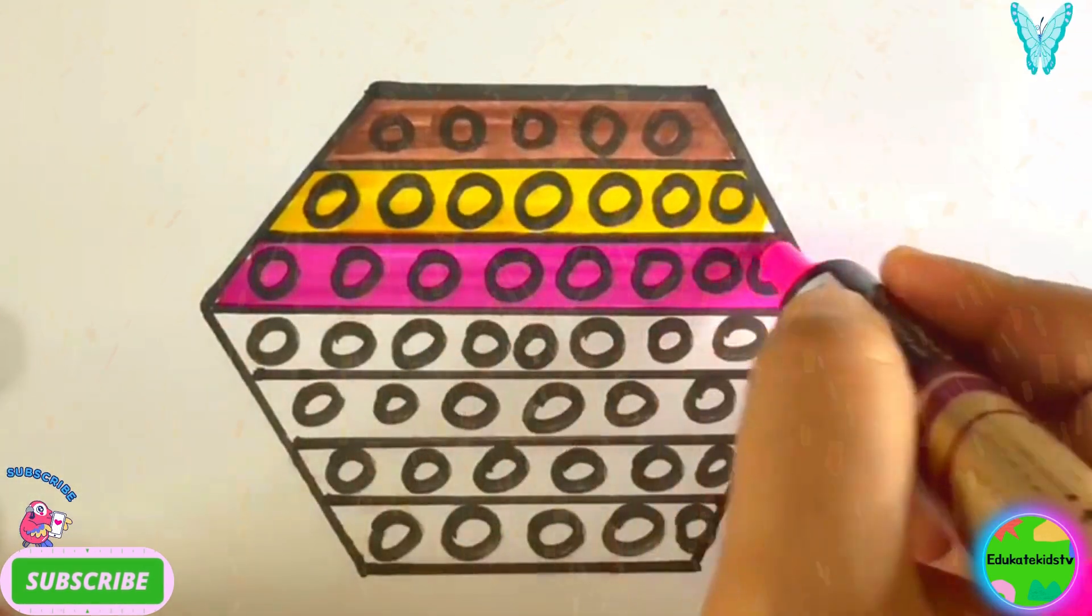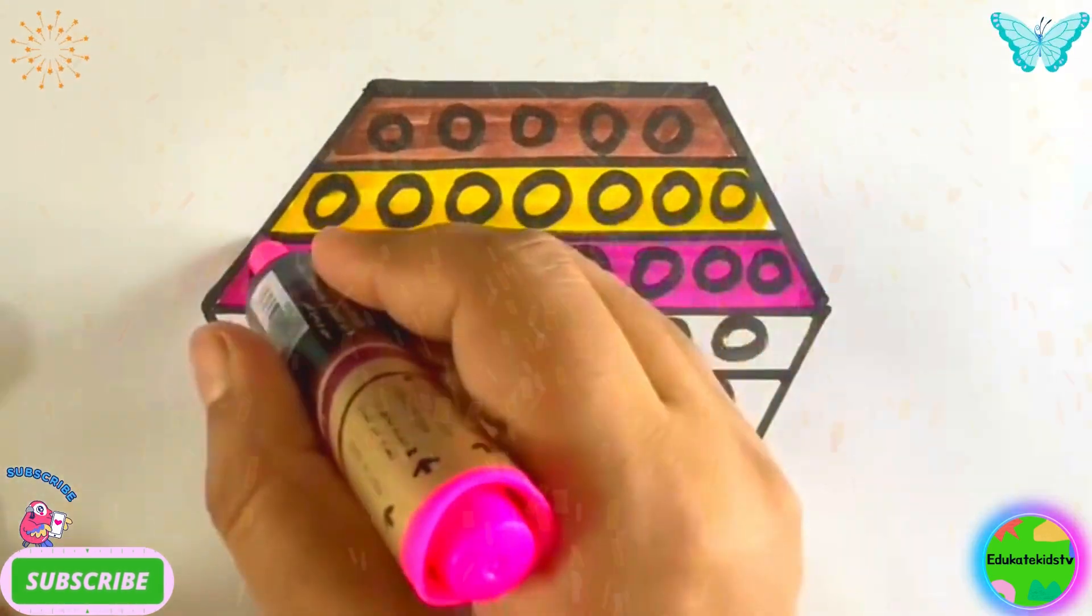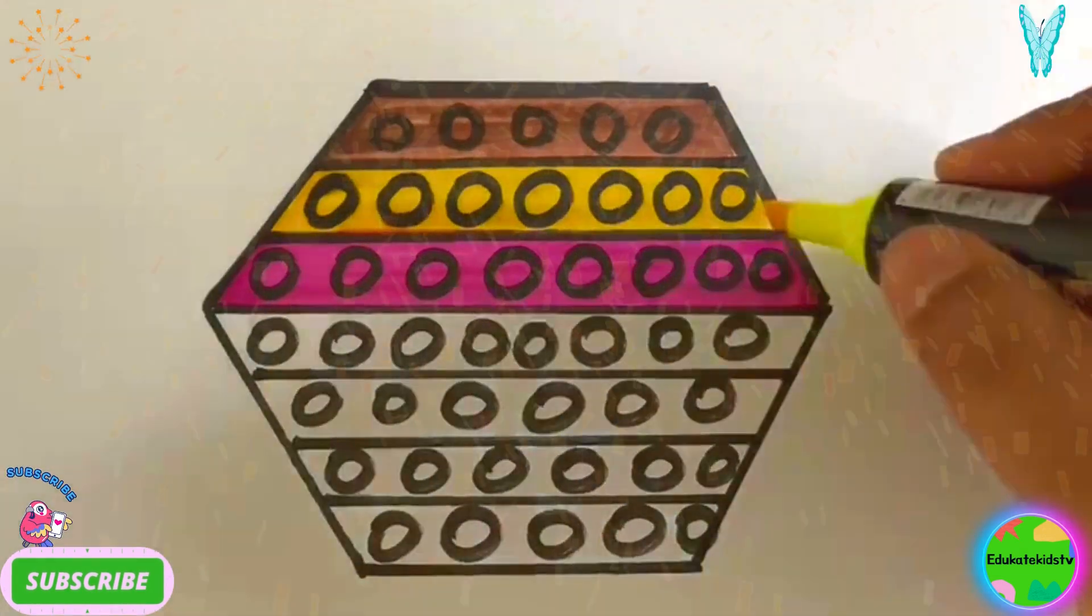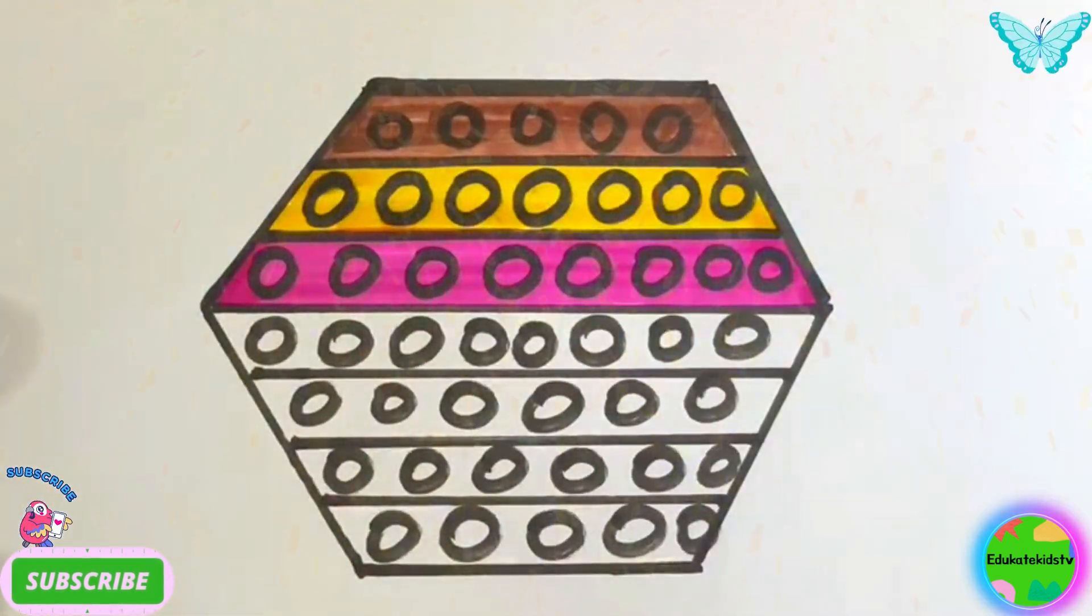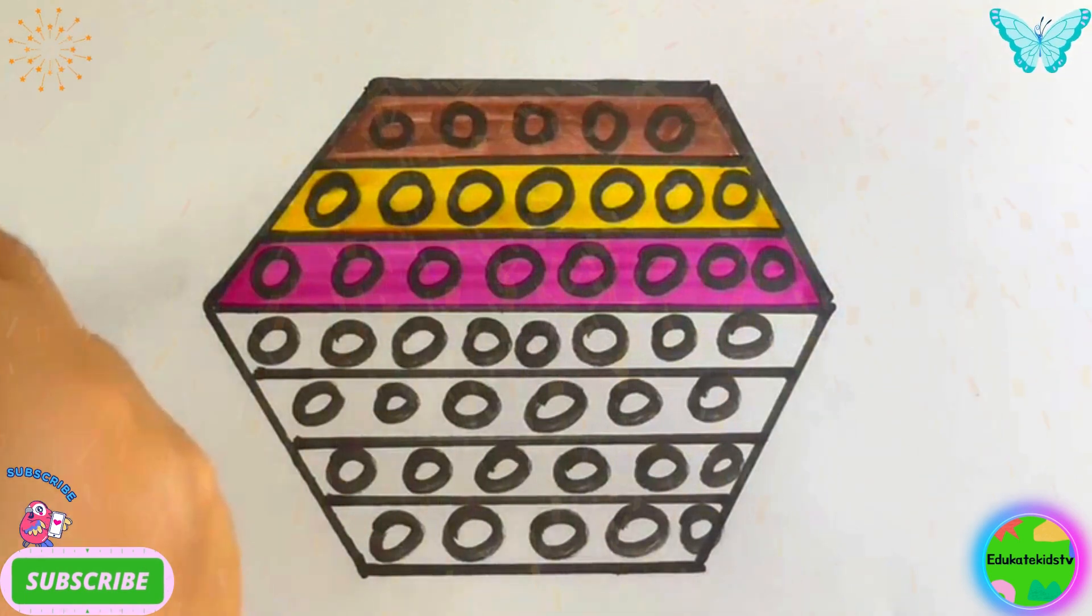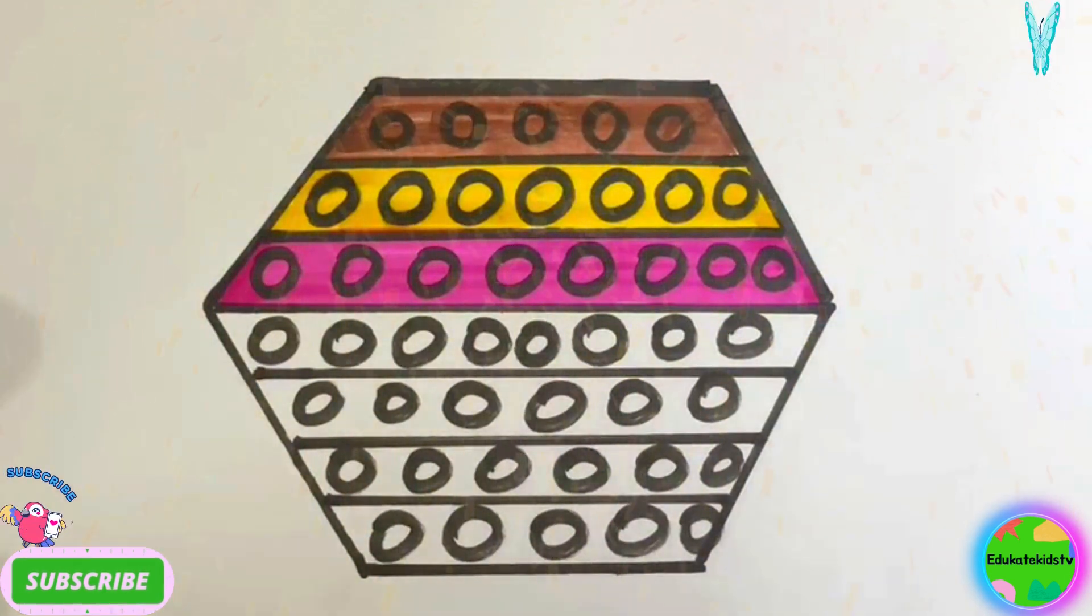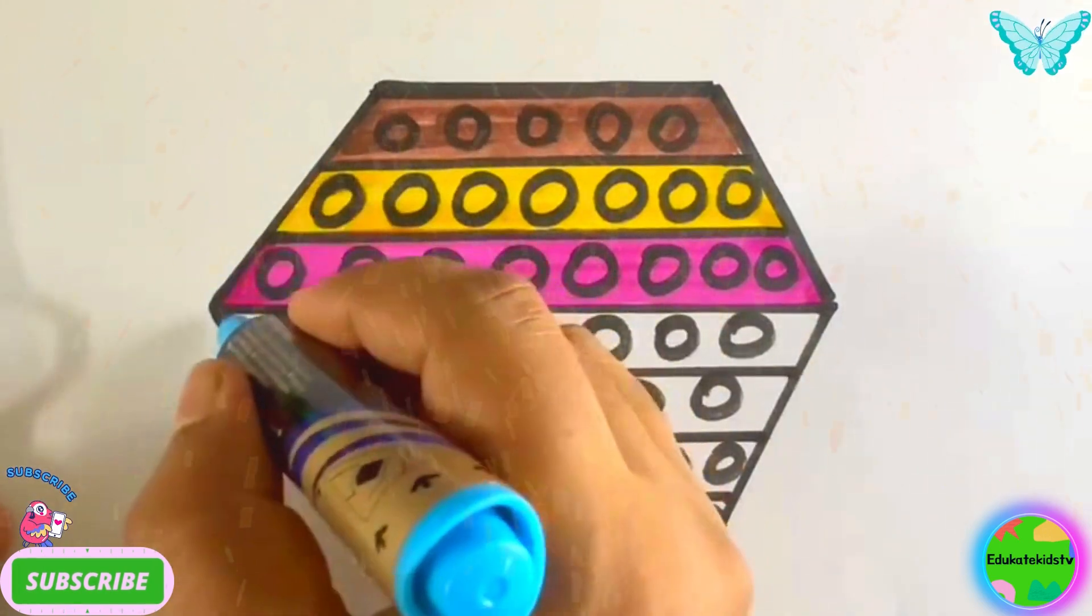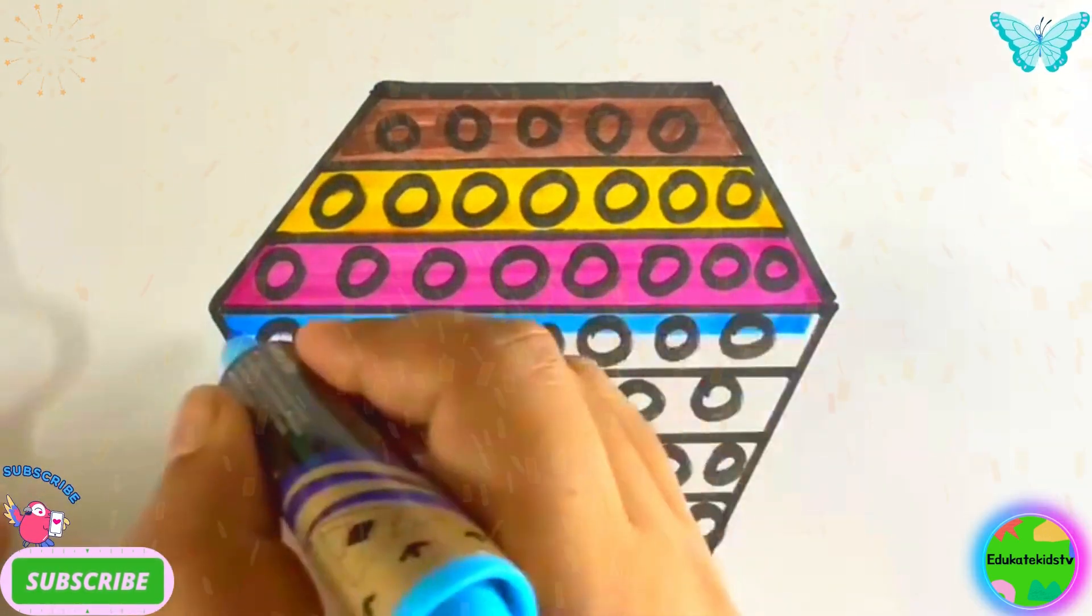Red color. Green color. This little bit yellow is left. Okay. Now I'll take blue color to draw another line. Wow.